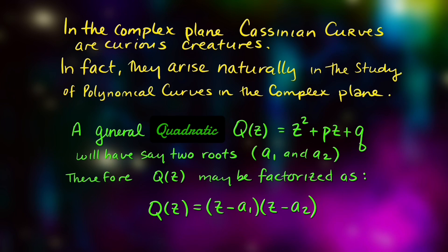And let's say it has two roots, a_1 and a_2, which are the foci, and so that our polynomial here can be written in factored form as z minus a_1 times z minus a_2.